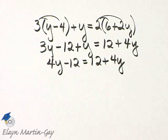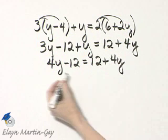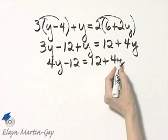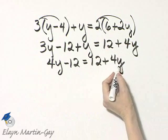Now let's continue by moving variable terms to one side of the equation, constants to the other, and it makes no difference what goes on what side, but I'll just move variable terms to the left side. It's just a habit for me. So I will subtract 4y from both sides.